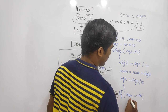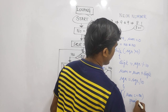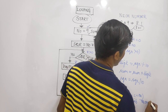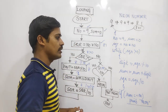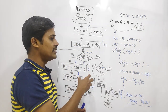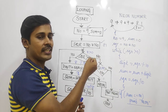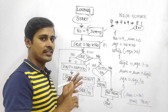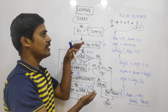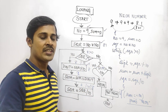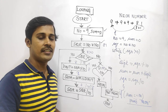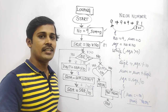If sum equals the given number, print 'neon'; otherwise print 'not neon'. In this program we do two things: compute the square of the number, then find the sum of digits of that square. If those two match, it is a neon number. Thank you for watching — see you in the next video.